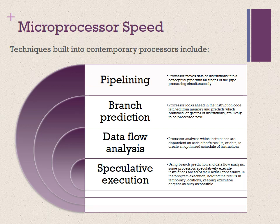The next technique was speculative execution. Using branch prediction and data flow analysis, some processors speculatively execute instructions ahead of their actual appearance in the program execution, holding the result in temporary locations. This enables the processor to keep its execution engine as busy as possible by executing instructions that are likely to be needed. These and other sophisticated techniques are made necessary by the sheer power of the processor and make it possible to exploit raw processor speed.